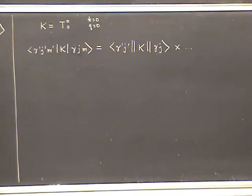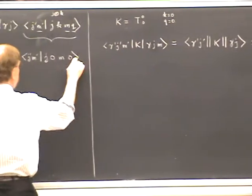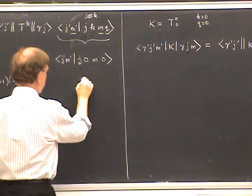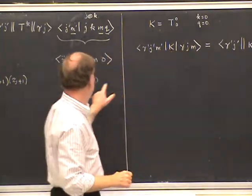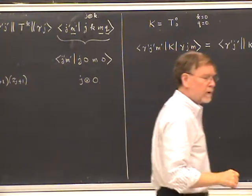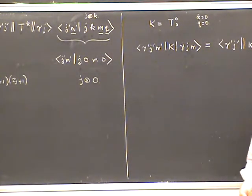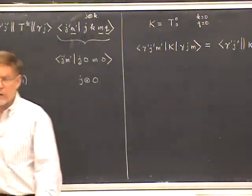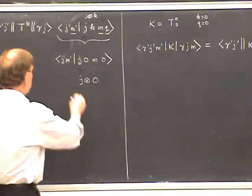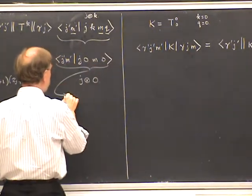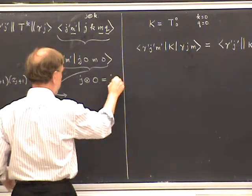The Clebsch-Gordon coefficient, since K and Q are equal to zero, turns into a J-prime M-prime scalar product with J zero and M zero. What one is doing here is taking J across zero — J for the K space rather than zero for K itself. Adding zero angular momentum to an angular momentum doesn't change it at all, so this Clebsch-Gordon coefficient is just a Kronecker delta: delta J J-prime delta M M-prime.